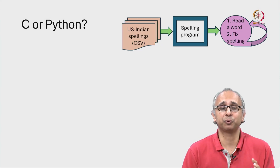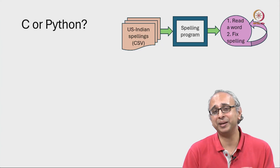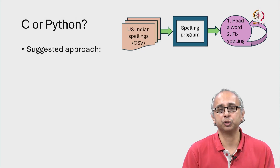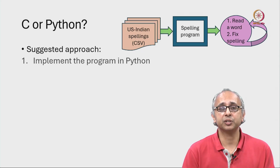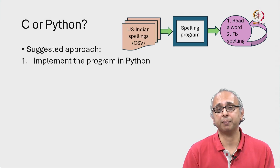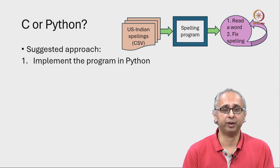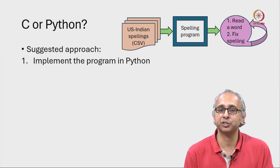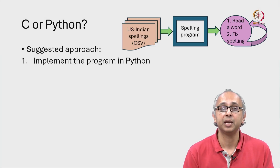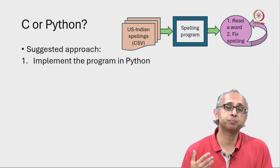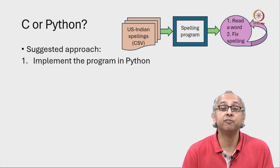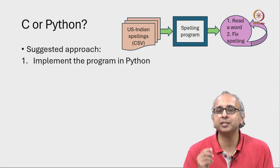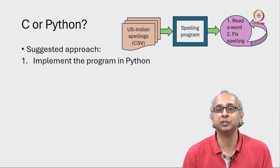Now should we implement this program in C or in Python? My suggestion is to first implement this program in Python. Make use of the fact that Python allows us to do a lot of string manipulations very easily. Now if it turns out that this program is not efficient enough, not fast enough, then we might want to consider translating it into C.